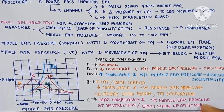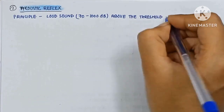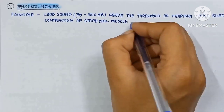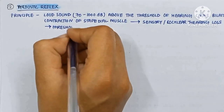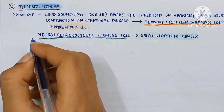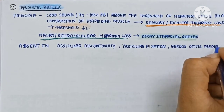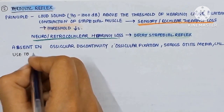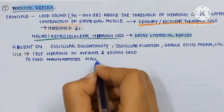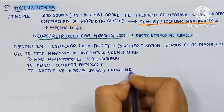Now the acoustic reflex. The principle: a loud sound 70 to 100 dB above the hearing threshold causes bilateral contraction of the stapedial muscle. The threshold decreases in neural or retrocochlear hearing loss. Stapedial reflex decay is absent in ossicular discontinuity, ossicular fixation, serous otitis media, and conductive hearing loss. It is used to test hearing in infants and young children, to find malingerers, and to detect cochlear pathology, eighth nerve lesions, facial nerve lesions, and brainstem lesions.